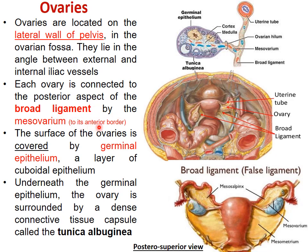The ovary has an anterior border and a posterior border. Where the two surfaces join, they form the border. The anterior border is on the anterior side and contains the hilum. The ovary is attached at its anterior border to the broad ligament via the meso-ovarium. Where is the hilum of the ovary? At the anterior border.